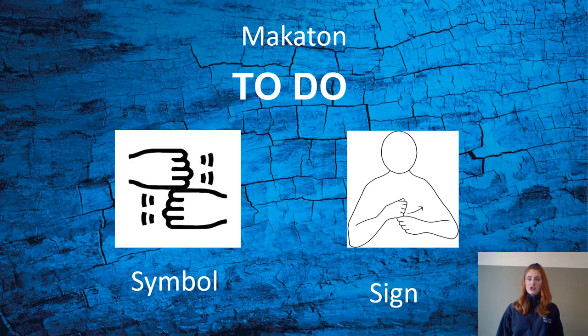The word we're going to learn today is 'to do'. We can see the picture, which is a symbol of two hands, one on top of each other. And the sign, which is the action, which we'll do together.